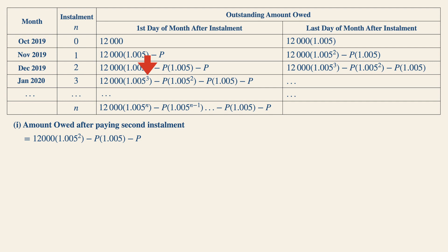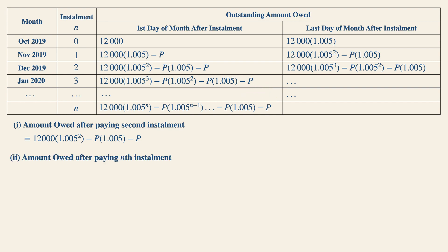So the nth installment will then be 12,000 times 1.005 to the power n, and it subsequently descends consecutively for each term down to 1.005 to the power 0. Therefore, the amount owed upon paying the nth installment is given by: 12,000 × 1.005^n, all the way down to minus P × 1.005 minus P.